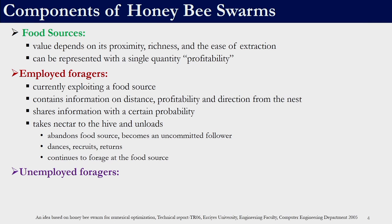Employed bees are currently associated with a food source and are exploiting it. They contain information on distance, profitability, and direction from the nest, and share this information with a certain probability to other bees. When a bee collects nectar and comes back to the hive to unload it, it has three options: it can either abandon the food source and become an uncommitted follower; dance in the dance area (performing a waggle dance) to recruit other bees and return to the food source; or continue to forage at the food source without recruiting any other bees.